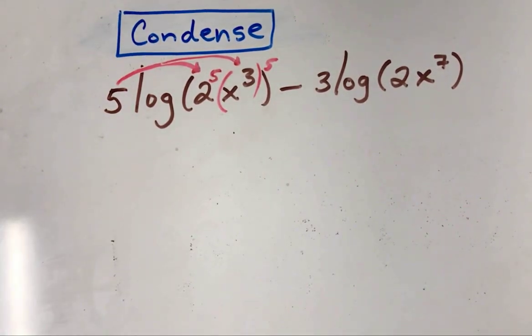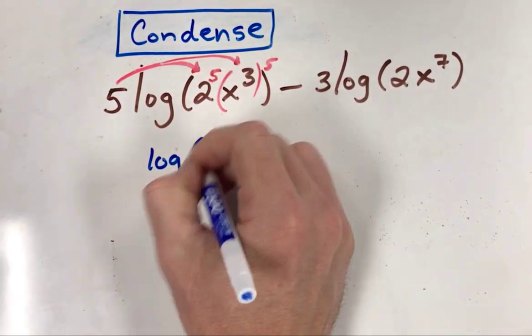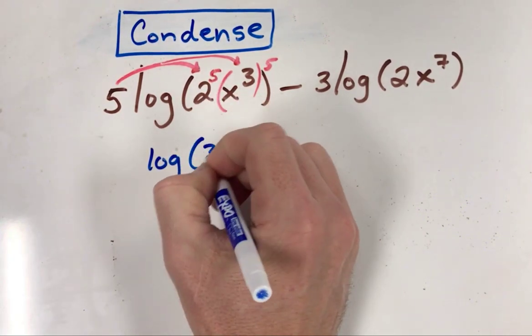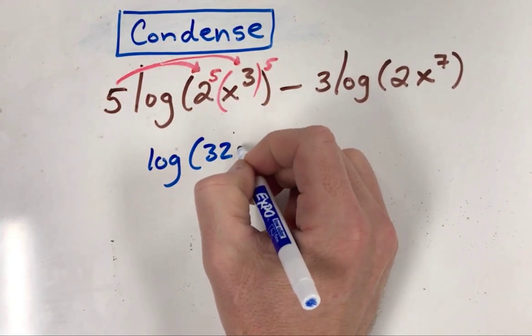Let's rewrite that first. Now I've got a log of 2 to the fifth power, which gives you 32, then x to the fifteenth power.